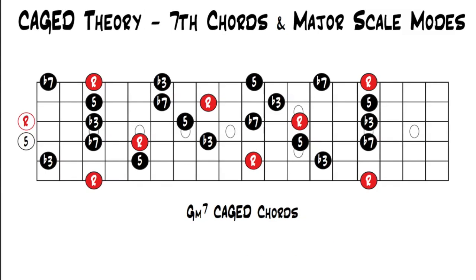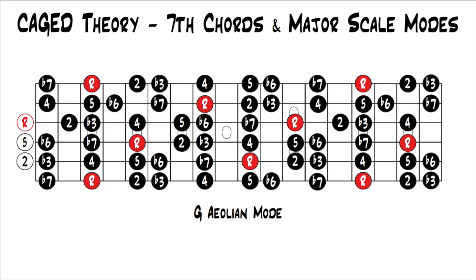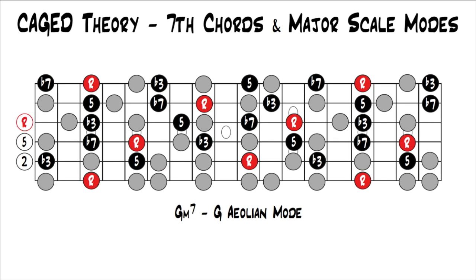There's one more mode that the minor seven chords work with. Back to G minor seven cage chords — the G minor seven also works with the Aeolian mode, which is on your screen now. If we highlight the minor seven chords, you can see that it still fits within this mode. So the minor seven chords work with all three minor modes of the major scale: the Dorian mode, the Phrygian mode, and the Aeolian mode.